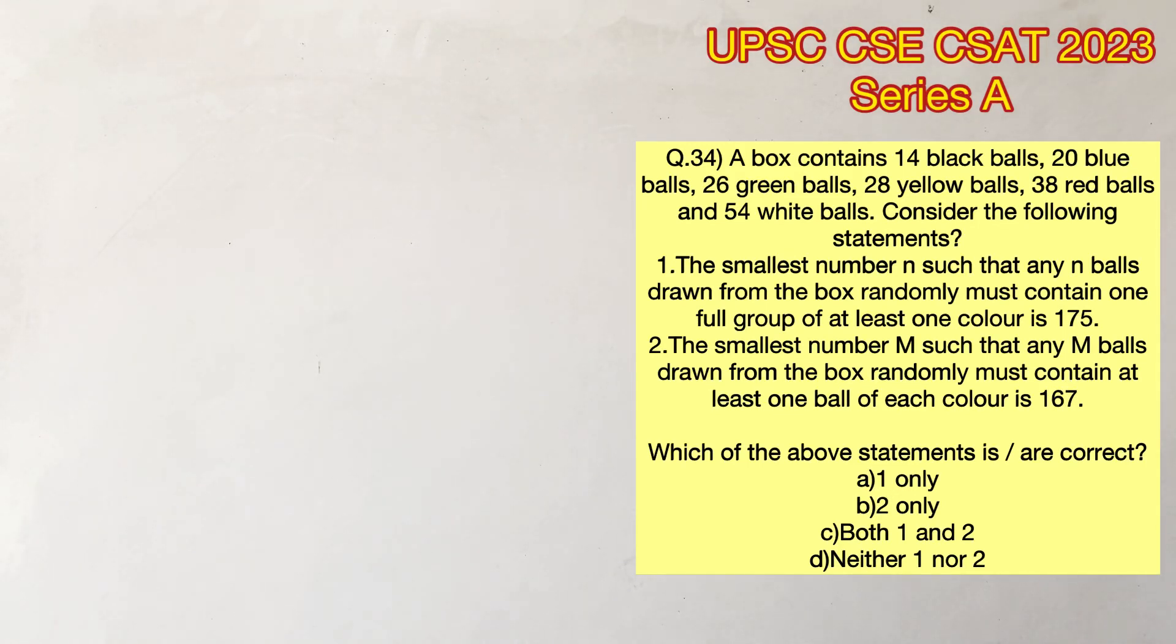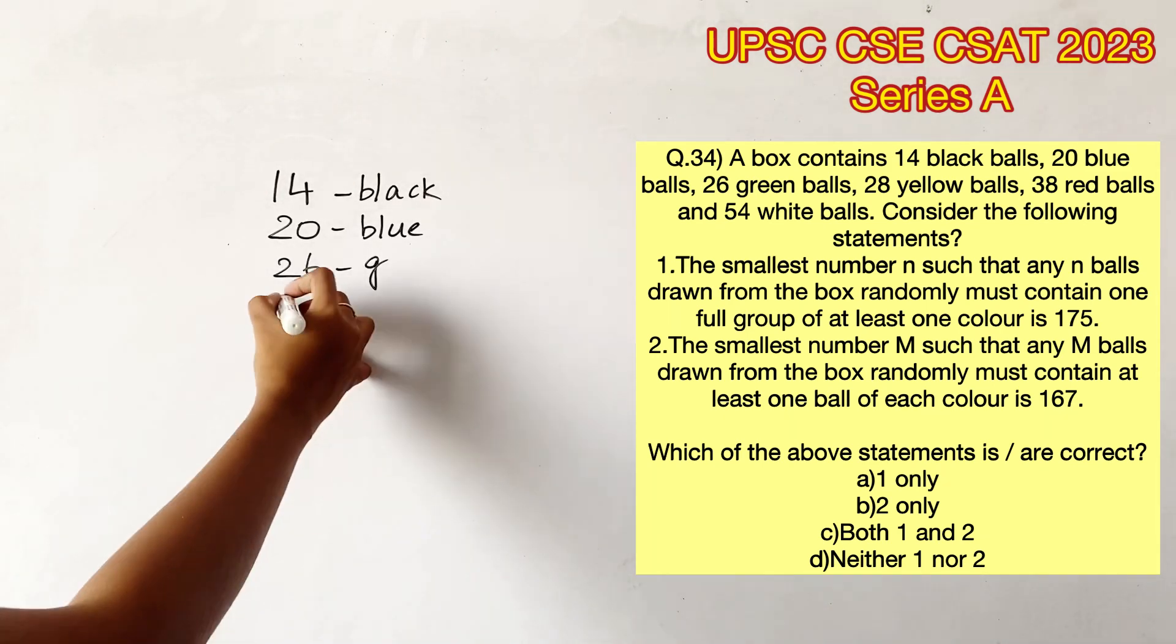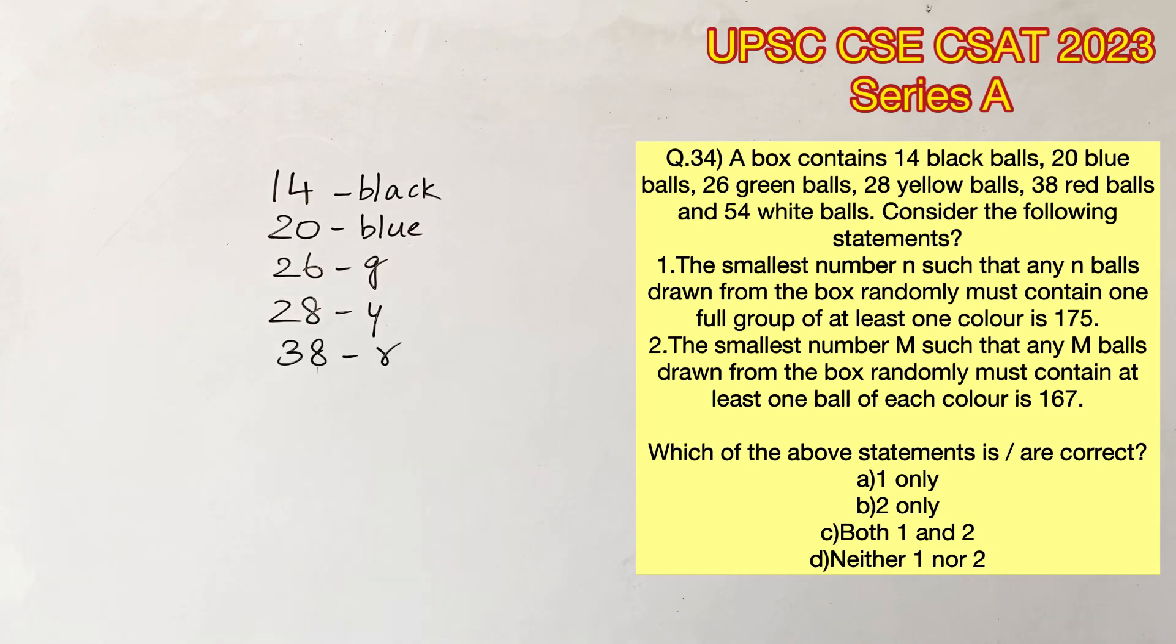Welcome to Aptitude Destination. Please pause the video and read the question completely. It is said that a box contains 14 black balls, 20 blue balls, 26 green balls, 28 yellow balls, 38 red balls, and 54 white balls.